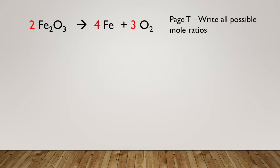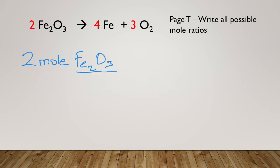On page T at the top, there's a section that says write out all the possible mole ratios. Looking at this particular equation — not in your pace for you to do, but let's talk about how we'd do it — we have two moles of iron oxide, which yields four moles of iron and three moles of oxygen. One ratio is two moles of Fe₂O₃ over four Fe.